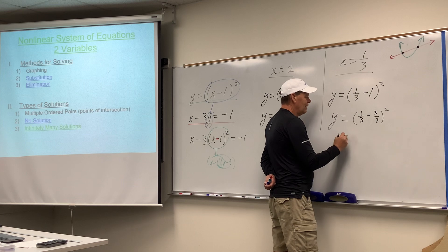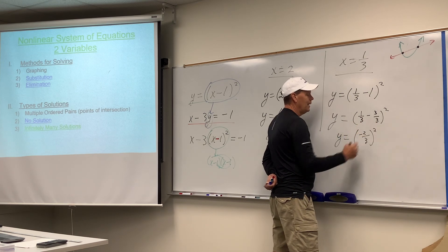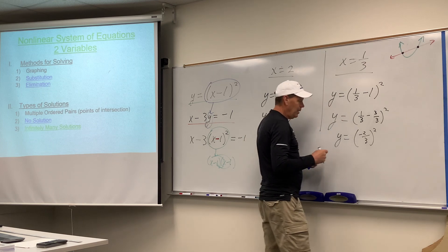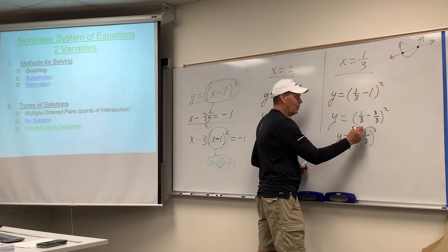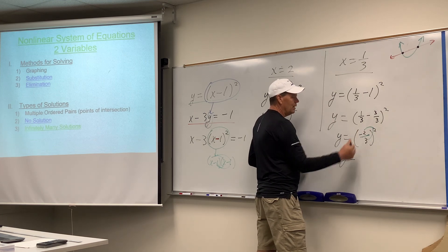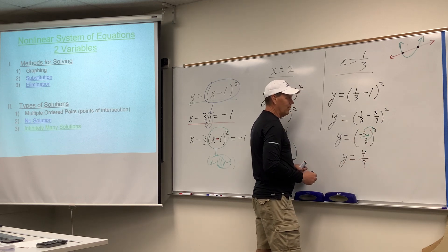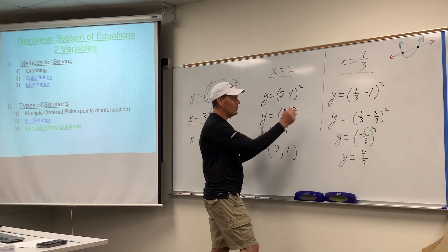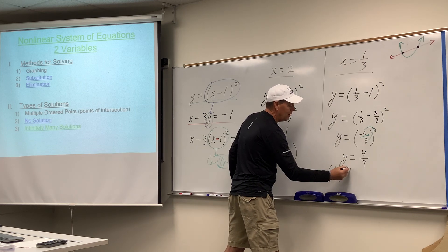And then, one third minus three thirds is negative two thirds. And then, because that's a fraction, because there's no addition or subtraction in there, we can drop the squared on both of them. And it looks like negative two squared is positive four, and three squared is nine. Four ninths. So, that would create the ordered pair x, one third, y, four ninths.